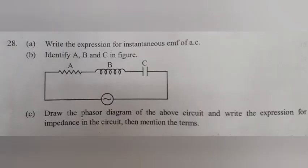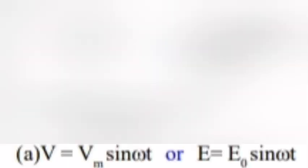Question 28A: Write the expression for instantaneous EMF of AC. Answer: V equals Vₘ sin ωt or E equals E₀ sin ωt.